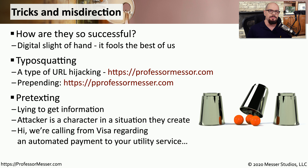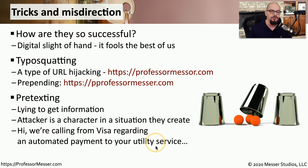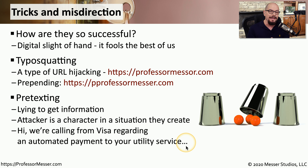Very commonly these messages have some type of pretexting, which is a fancy way of saying they're going to lie to you. They put some type of situation in place to get you to act on it. For example, they may send an email saying, 'Hi, we're calling from Visa regarding an automated payment to your utility service,' and then have you click something or provide payment over the phone. Because I do have an automated payment for my utility service, this might get me relaxed enough to think the caller really is from Visa — but of course this is an attacker trying to gather my credit card information.